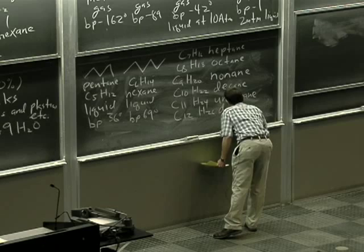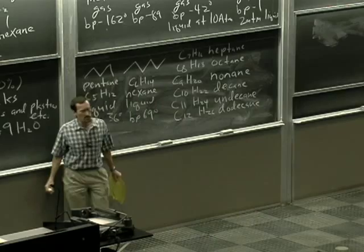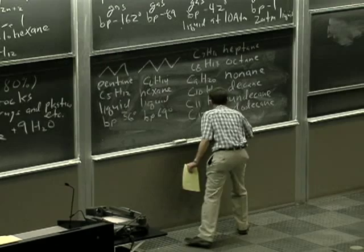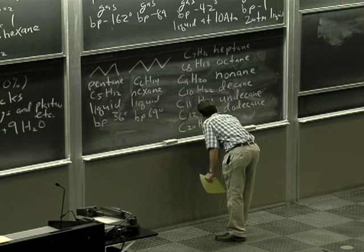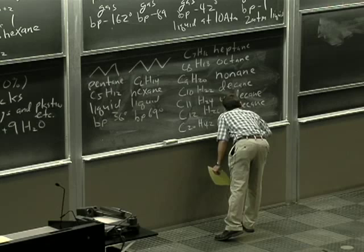And I'll give you one more just in case you hear it. Icosane is C20H42, E-I-C-O-S-A-N-E.